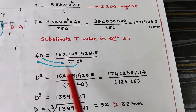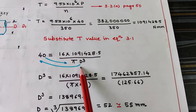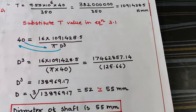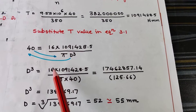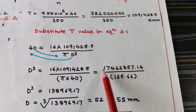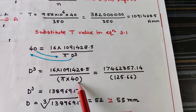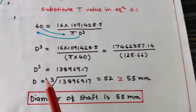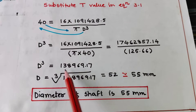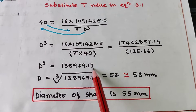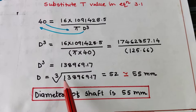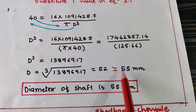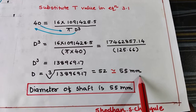Rearranging the equation, D³ = (16 × 1,091,428.5) / (π × 40). Multiplying 16 by the torque value and keeping the denominator as 125.66, D³ = 138,969.17. Taking the cube root gives D = 52 mm, which is rounded up to a shaft diameter of 55 mm.